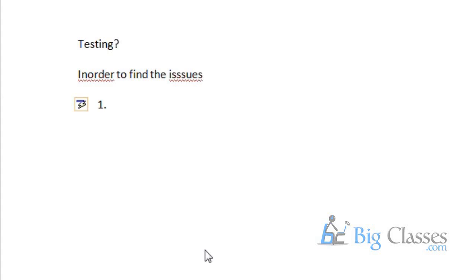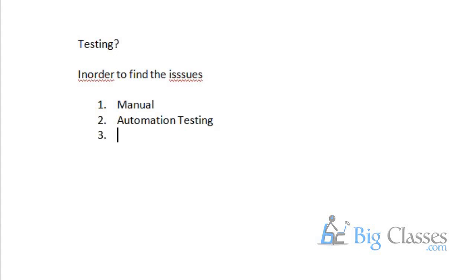To find the issues on the application, we have two ways: one is manual testing and another one is automation testing. Both of these are specific for functional testing. Manual is functional testing, automation is functional testing. For doing functional testing we have two methods: manual and automation.